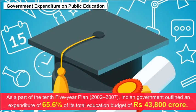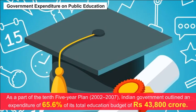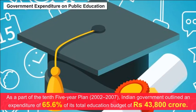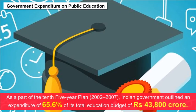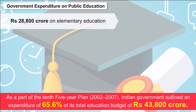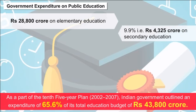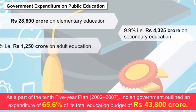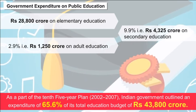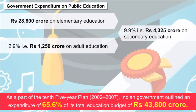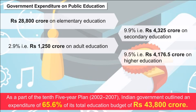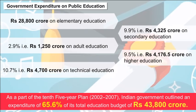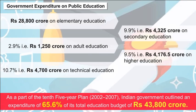Government Expenditure on Public Education: As part of the 10th Five-Year Plan (2002–2007), the Indian government outlined expenditure of 65.6% of its total education budget of ₹43,800 crore — i.e. ₹28,800 crore — on elementary education; 9.9% i.e. ₹4,300 crore on secondary education; 9.9% i.e. ₹4,300 crore on higher education; 10.7% i.e. ₹4,700 crore on technical education; and the remaining amount on other areas.